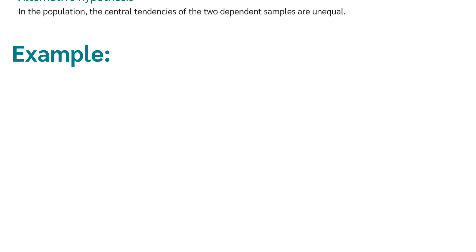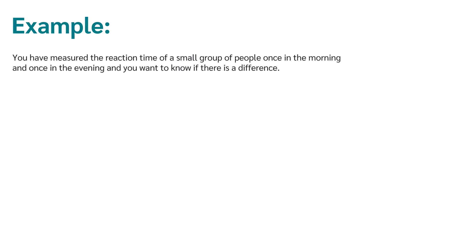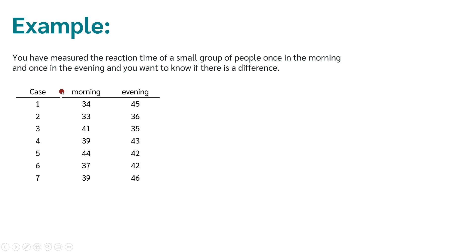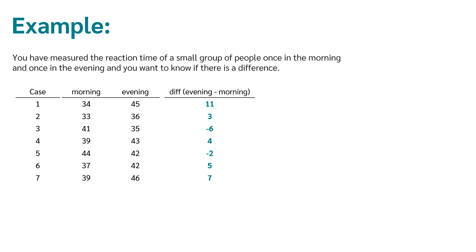Now we look at a simple example. Let's say you measured the reaction time of a small group of people, once in the morning and once in the evening, and you want to know if there is a difference. You measure the reaction time of 7 people in the morning and in the evening. The measured values are therefore available in pairs. If the difference were normally distributed, you would use a t-test for dependent samples. If not, you would use a Wilcoxon test. Let's assume there is no normal distribution and we calculate a Wilcoxon test. The first thing we do is form ranks.